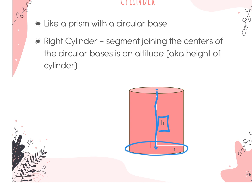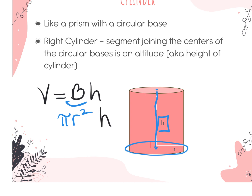The formula is still the same: it's capital B times H. But this time, the capital B — the area of the base shape — is a circle, so it's pi r squared, and then it's multiplied by the height of the cylinder. We're going to see this formula officially coming up in two slides.